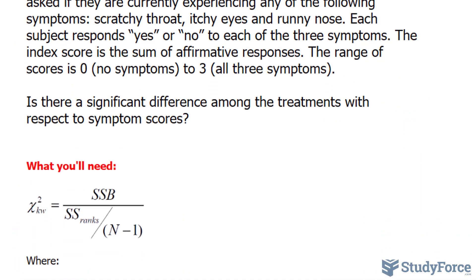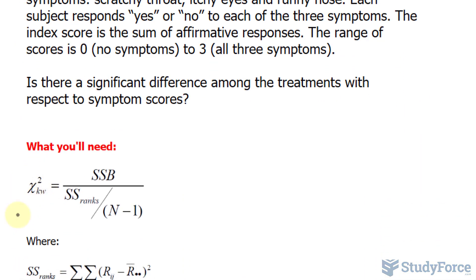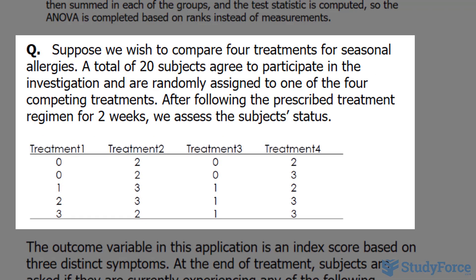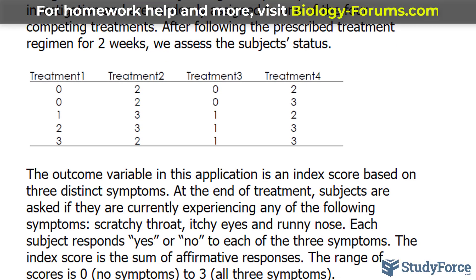The test statistic looks like this. It's chi-square. Let's read the question. Suppose we wish to compare four treatments for seasonal allergies. A total of 20 subjects agree to participate in the investigation and are randomly assigned to one of the four competing treatments. After following the prescribed treatment regimen for two weeks, we assess the subject's status, and that's outlined in this table.